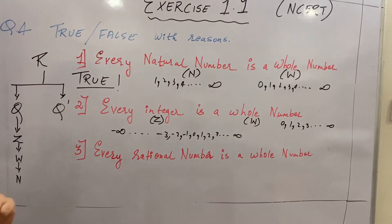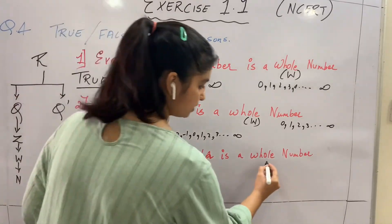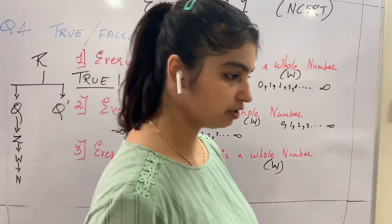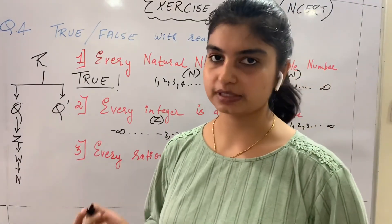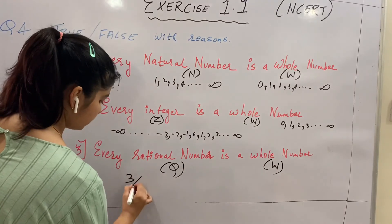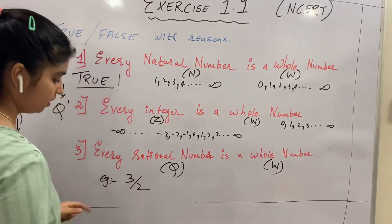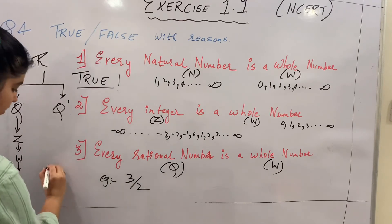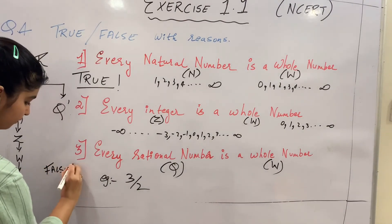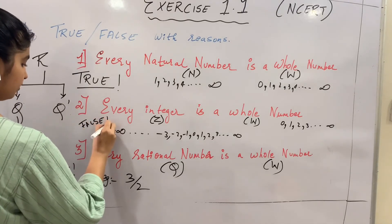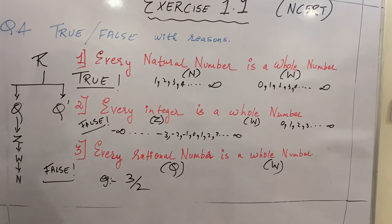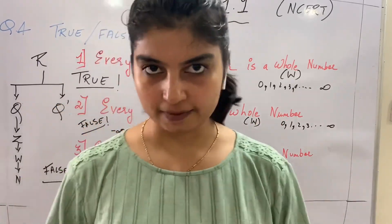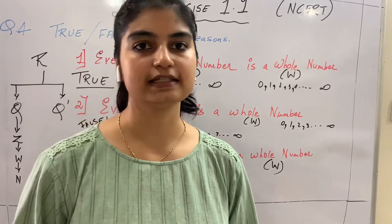Statement 3 — every rational number is a whole number. A rational number can be expressed in p by q form where p and q are integers and q ≠ 0. For example, 3/2 is a rational number — is 3/2 in the list of whole numbers? No, it is not. So this statement is FALSE. To summarize: Statement 1 is true, Statements 2 and 3 are false. This is how you solve true/false questions by giving examples as reasons.